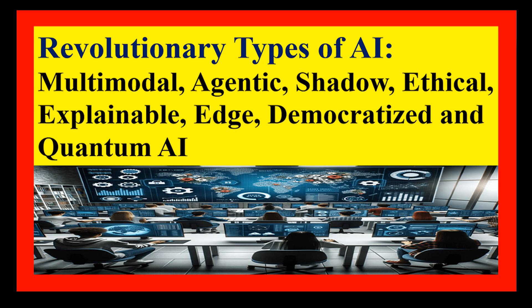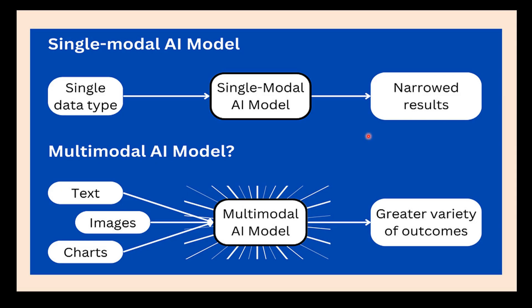Multimodal AI merges different types of information to deliver richer insights. Agentic AI acts autonomously towards specific objectives. Shadow AI copies human methods. Ethical AI characterizes moral values. Explainable AI provides clear rationales. Edge AI performs nearby. Quantum AI boosts speediness. And democratized AI widens accessibility. So let's understand them in detail, starting from Multimodal AI.